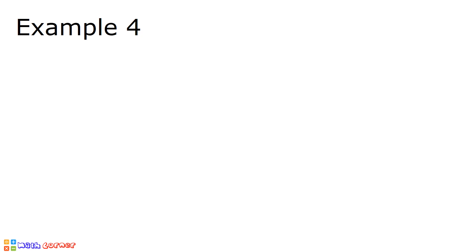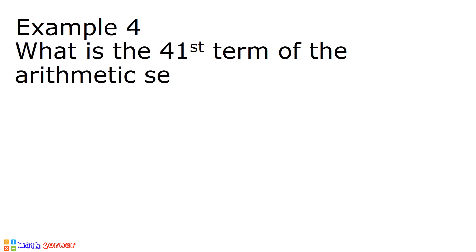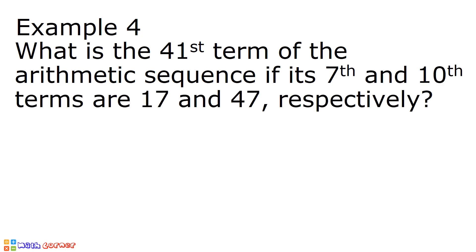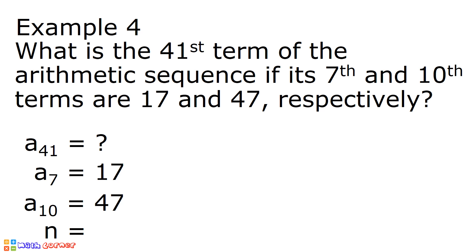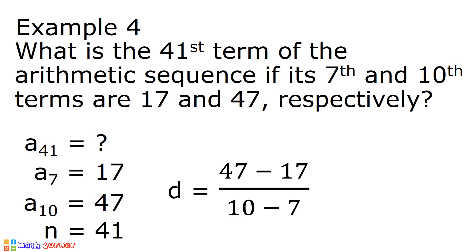Last example, example number 4. What is the 41st term of the arithmetic sequence if its seventh and tenth terms are 17 and 47 respectively? A sub 41 is the missing term. A sub 7 is equal to 17, a sub 10 is equal to 47, and n is equal to 41. Again, there is no common difference given, so our first step is to solve for the common difference using the shorter way. The common difference is equal to 47 minus 17 divided by 10 minus 7. 47 minus 17 is 30, and 10 minus 7 is 3, so 30 divided by 3 is equal to 10. Our common difference is equal to 10.